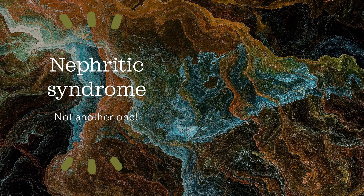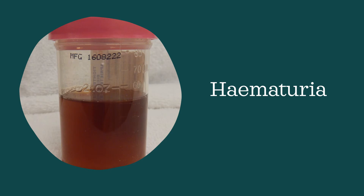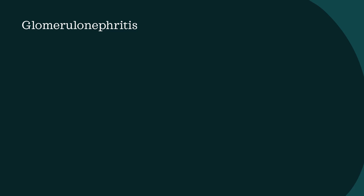Now let's look at nephritic syndrome. Remember, this is an inflammatory disease. You might have a patient who presents with hematuria — blood in the urine — which occurs because of the disruption of the glomerular filtration barrier. Because of this pathology, red blood cells, albumin, and large molecules can get filtered into the urine, resulting in nephritic syndrome. Nephritis just means inflammation of the nephron, so technically it can occur anywhere, but often it results in the glomerulus, where it's called glomerulonephritis.